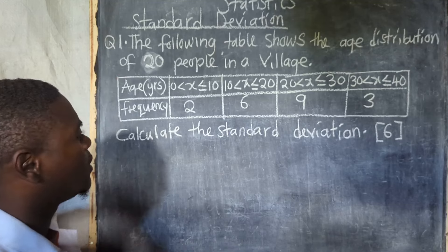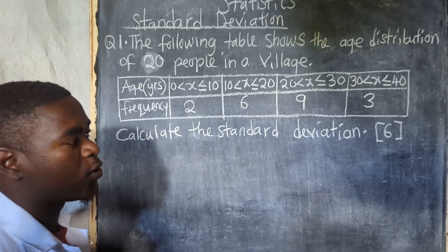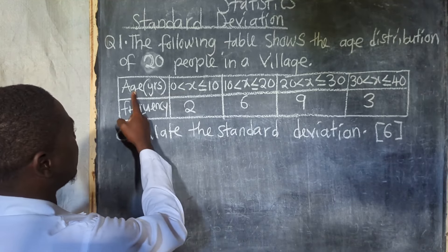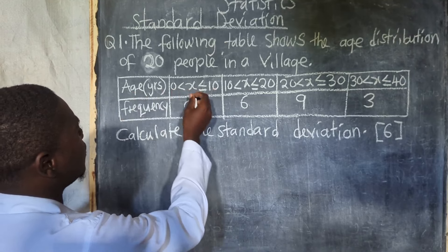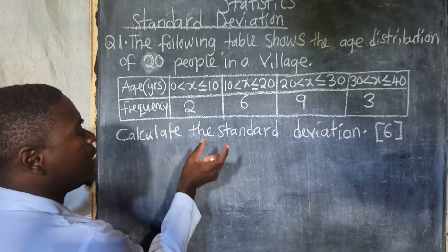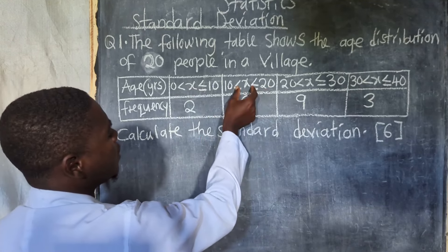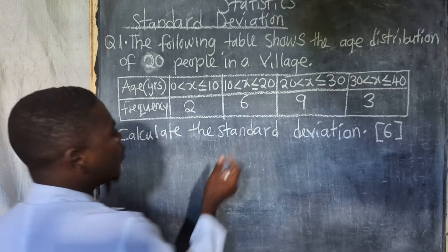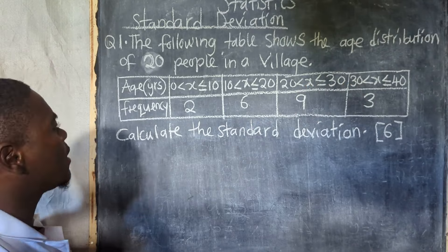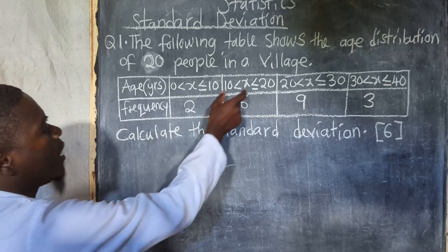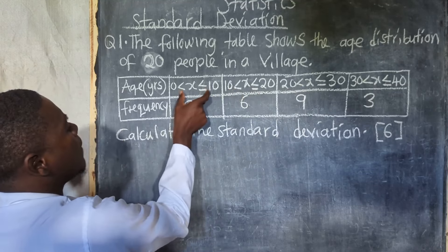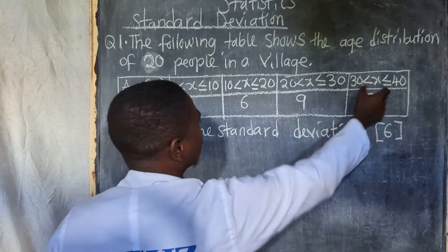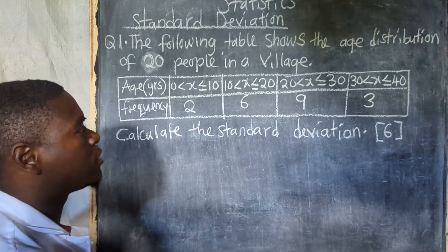Why is it a grouped data? How have I known that this is a grouped data? Because the data is grouped. Here they are telling you that this is age — age between 0 and 10, that is X. So it is grouped, that is a range. Between 0 to 20, between 20 to 30 — I've seen this is grouped. So any question that comes in this manner, whenever you notice the row on top is grouped, just know that you are talking about grouped data.